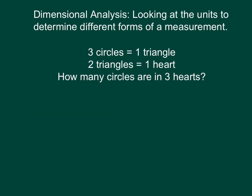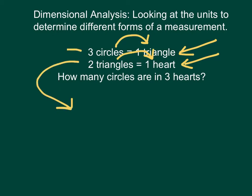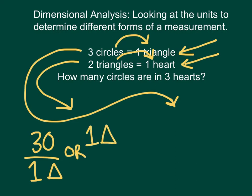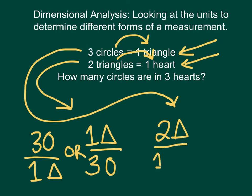There's actually a much easier way to do this using what are called conversion factors. Both of these are conversion factors: for every three circles we have one triangle, and for every two triangles we have one heart. These can be written in fraction form. I can write three circles over one triangle, or one triangle over three circles. For the other one, I can write two triangles over one heart, or one heart over two triangles.